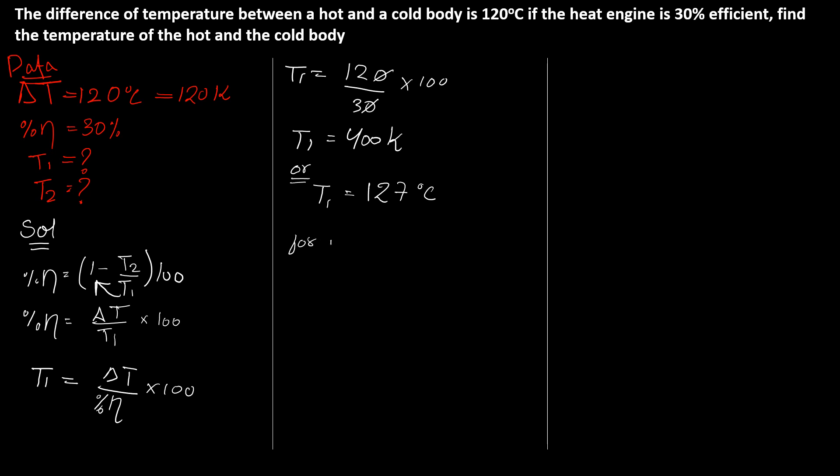For T2, you don't need to put this in Kelvin if you don't need to convert it. T1 minus T2. Delta T, we know it is 120 Kelvin. T1, now we find out, it is 400 Kelvin. And T2 will shift. T2 will be 400 minus 120 Kelvin.